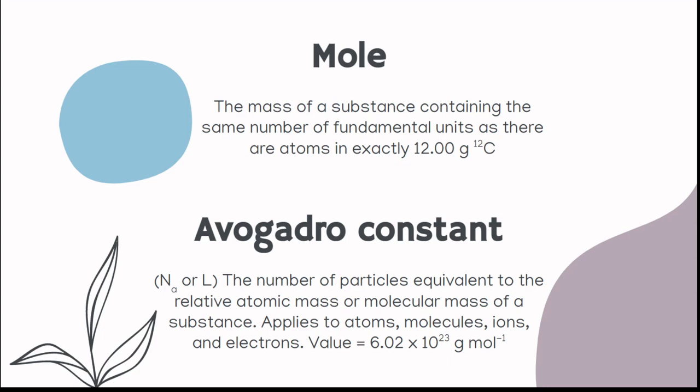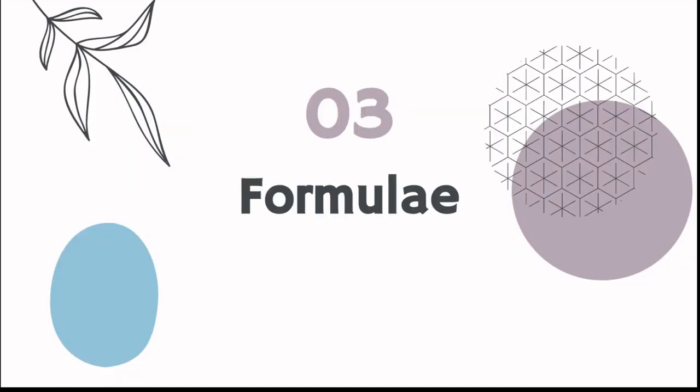It's the number of particles equivalent to the relative atomic mass or molecular mass of a substance. It applies to atoms, molecules, ions, or electrons. So the value is 6.02 times 10 to the 23rd. So that's really, really huge. You should only use that if you're finding really, really tiny things, atoms, molecules, electrons, etc. The transformation is 6.02 times 10 to 23 atoms are in one mole. That is the conversion. That's all they want out of that section too.